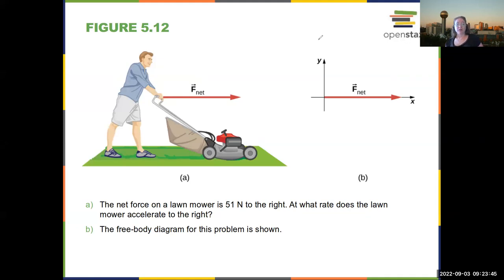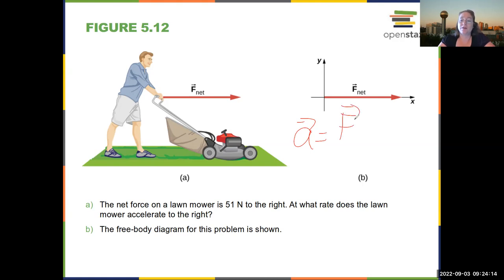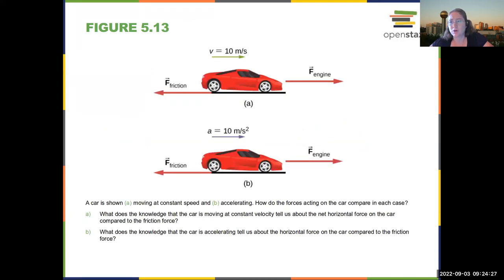You can't solve this lawnmower problem mathematically because we don't have the mass of the lawnmower, but the net force is the man pushing minus the internal resistance of the engine slowing it down. The acceleration would be F-net over m. There will be a free body diagram on the test — probably most tests this semester.